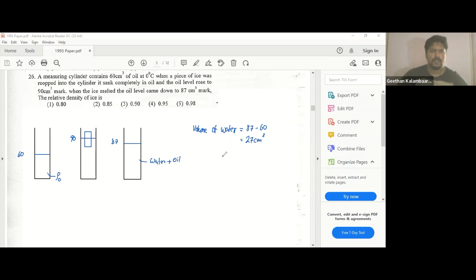Okay, and you know this is floating. So when it's floating, it floats because the upthrust is equal to the mg. Upthrust is also known as the weight of the displaced liquid. So the displaced liquid volume is 30, displaced volume of oil is 30.